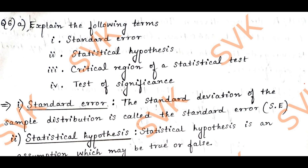I am going to solve questions A, B, and C. Here is the question: Explain the following terms — standard error, statistical hypothesis, critical region of a statistical test, and test of significance. Moving on to the first definition, standard error.